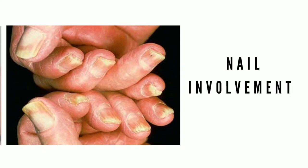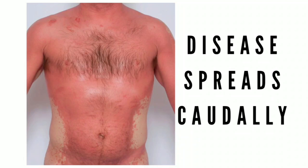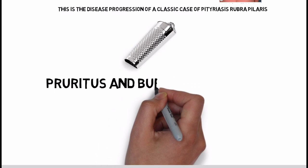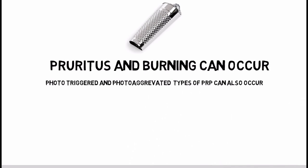Erythema with fine diffuse scale is often seen on the scalp. Scalp disease mimicking seborrheic dermatitis is a common initial clinical manifestation of the adult form. A rapid progression to erythroderma can occur over several weeks. Nail involvement is characterized by a thickened plate with yellow-brown discoloration and subungual debris. Mucous membranes can also be involved but very rarely, showing features similar to oral lichen planus. The most common form usually begins in the head and neck and then progressively extends downward.